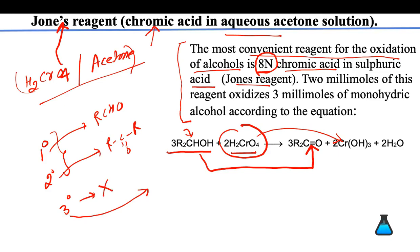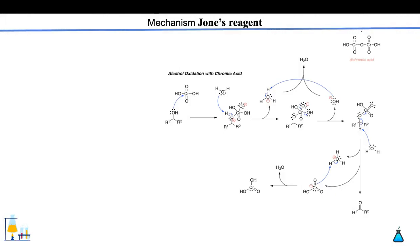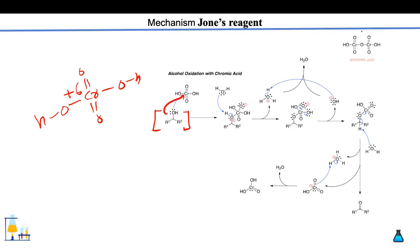With tertiary alcohol, Jones' reagent gives a chromate ester because of the absence of the alpha hydrogen. Now let's consider the mechanism. I have taken the example of a secondary alcohol treated with chromic acid. The structure of chromic acid is: Cr(=O)(OH)2 — the oxidation state of chromium is +6. The lone pair of the oxygen from the alcohol approaches chromium; both electrons of this oxygen are accepted, oxygen gets a negative charge, chromium gets neutralized, and the hydrogen is replaced, making the oxygen neutral. This gives the actual intermediate structure.